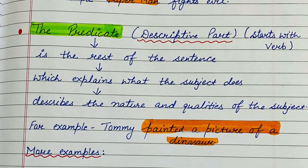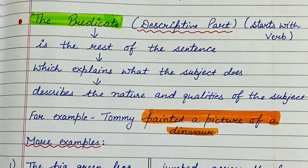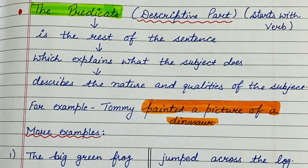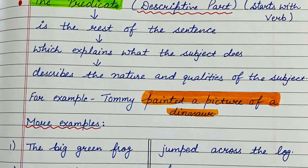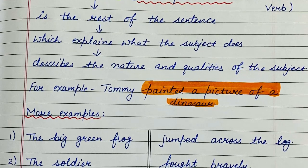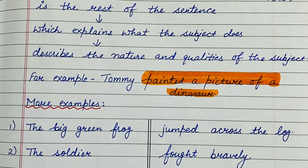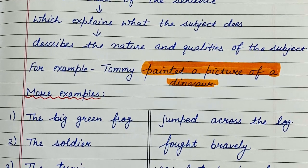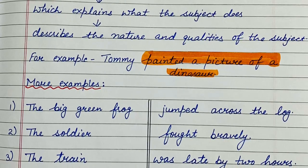For example: 'Tommy painted a picture of a dinosaur.' What did Tommy do? He painted a picture of a dinosaur. So 'painted a picture of a dinosaur' describes about Tommy. As I told, predicate is a descriptive part, so 'painted a picture of a dinosaur' tells about Tommy only. You will also notice that 'painted' is a verb, and predicate always starts with the verb — that verb can be a main verb or a helping verb. So here: painted — verb, fights — verb, shines — verb (the moon shines at night), moves — verb (the earth moves around the sun), is watering — verb (the gardener is watering the plants). So predicate is a descriptive part and it will start with the verb.